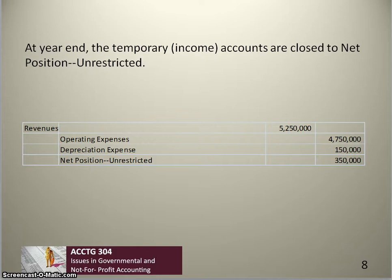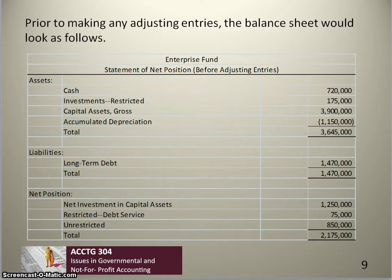If we generated a balance sheet at this point, everything in the asset and liability accounts would be correct and total net position would be correct, but the individual net position accounts would be wrong. Net investment in capital assets does not yet correspond to the book value of our capital assets and long-term debt, and restricted debt service has not yet been adjusted to reflect the additional $100,000 of investments we promised to restrict under the bond covenant.